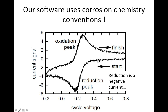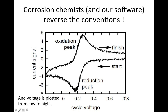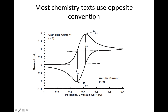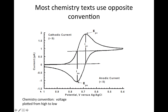Note the convention here: reduction is a negative current, and your voltage is plotted from low to high, so you go from right to left in the way you do your experiment. Chemistry texts actually use opposite conventions — the figures in your readings and in the protocol always show the cathodic current plotted as a positive current, and the voltage is plotted from high to low. So with that convention, your experiment would scan from high voltage, get a cathodic current, and return.